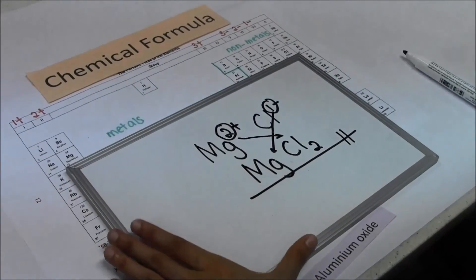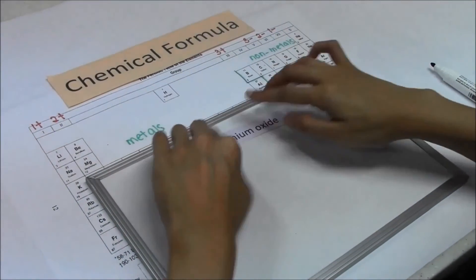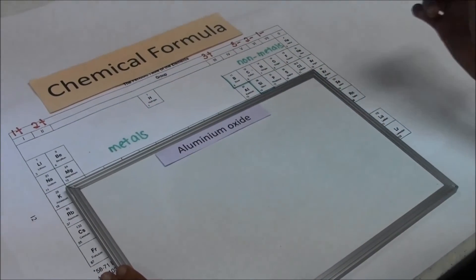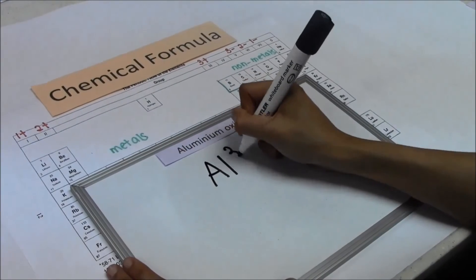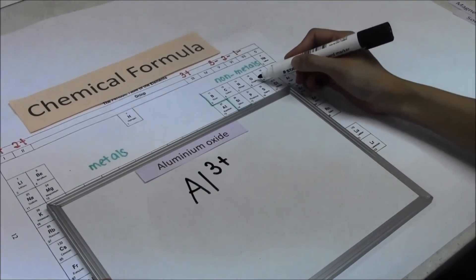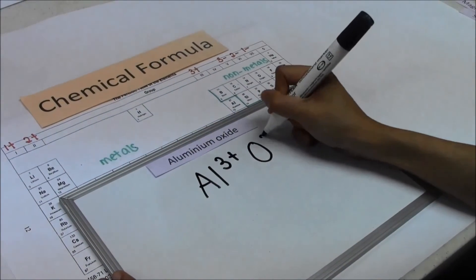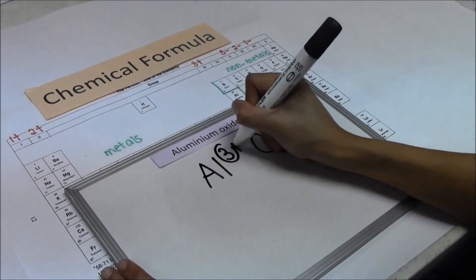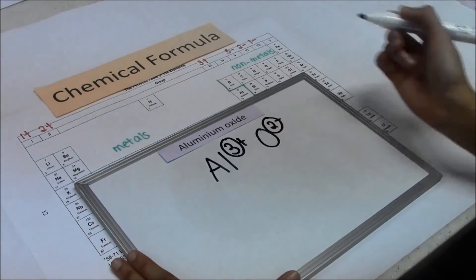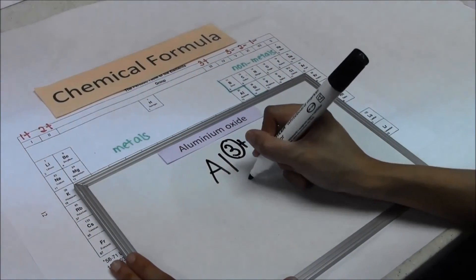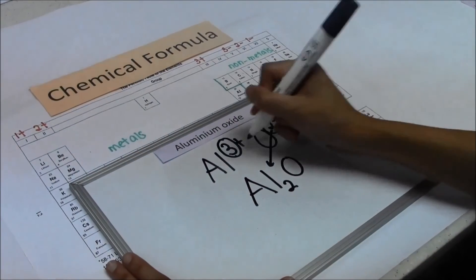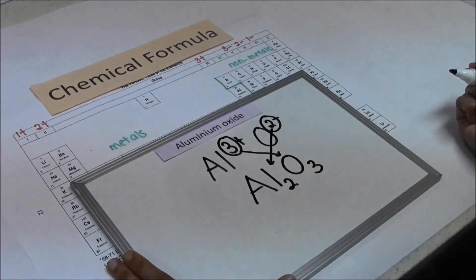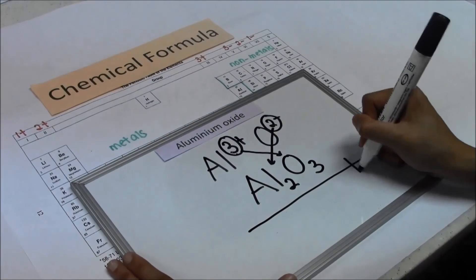Next example: aluminium oxide. Find aluminium on the periodic table and write down the working. Oxide comes from oxygen. Circle the number on the charge. The numbers are not the same, so we cannot cancel. Cross multiply: Al will follow the number, and O will follow the number. The chemical formula for aluminium oxide is Al₂O₃.